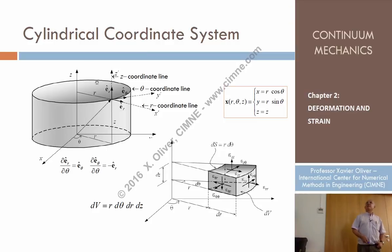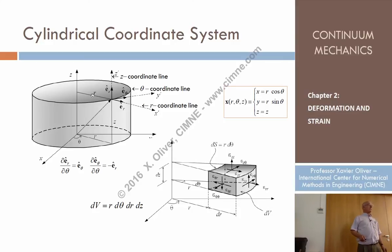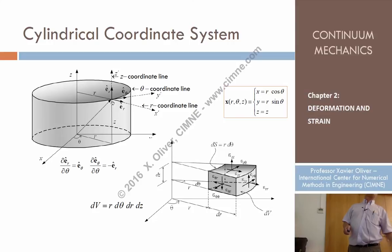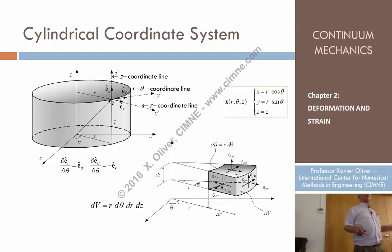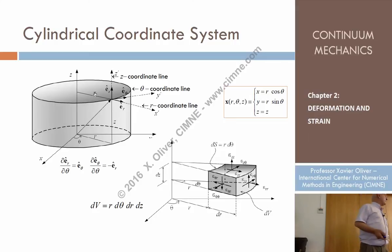Imagine that you have a Cartesian coordinate system and a point. That point in Cartesian coordinates is characterized by the three coordinates x, y, and z. But it could also be characterized by three different measures which are not the Cartesian coordinates. One would be the distance of the point to the z-axis, called r, the radius.